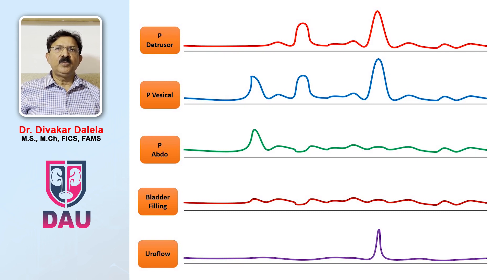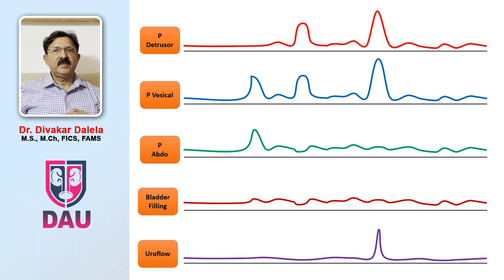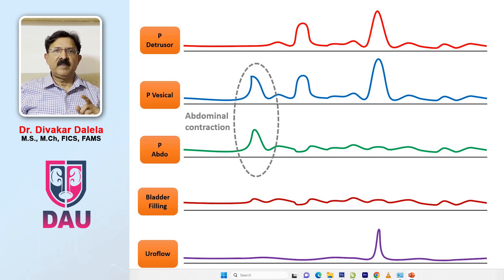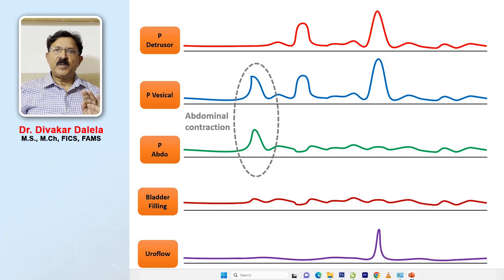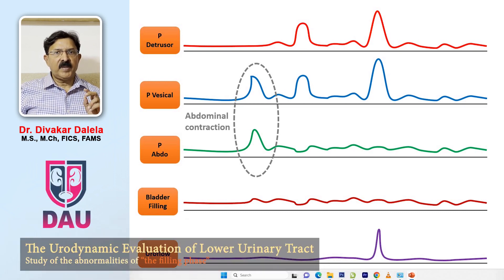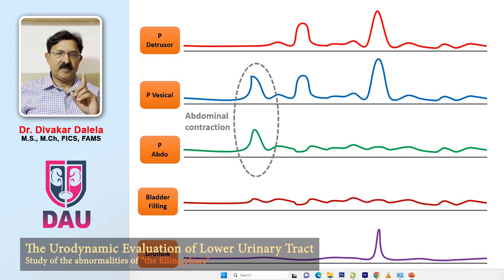Now let me explain these three elevations that you notice in these pressure lines. In the first elevation, you would notice that there is a rise in P-abdomen and a rise in P-vesicle, but P-detrusor does not show any change. This is checking the lines by the cough caused by the patient. When the patient coughs, the intra-abdominal pressure rises and so does P-vesicle. But since the detrusor muscle is not contracting, it will remain quiet. So this is the first elevation.